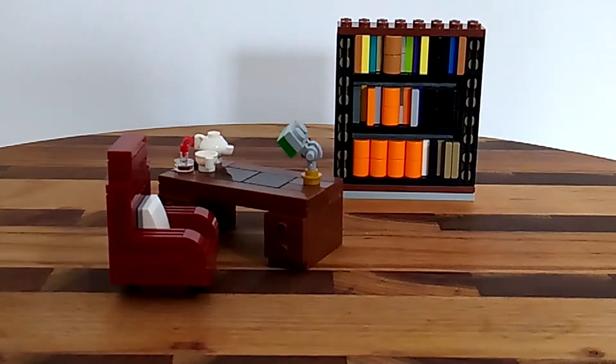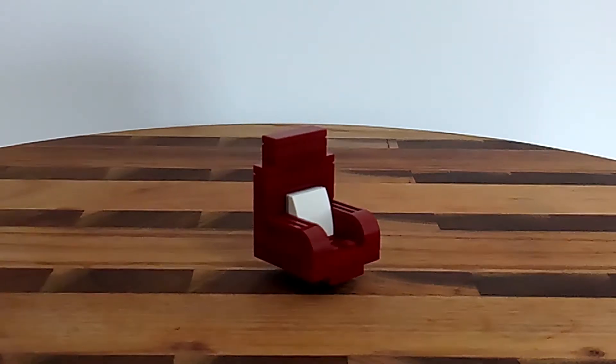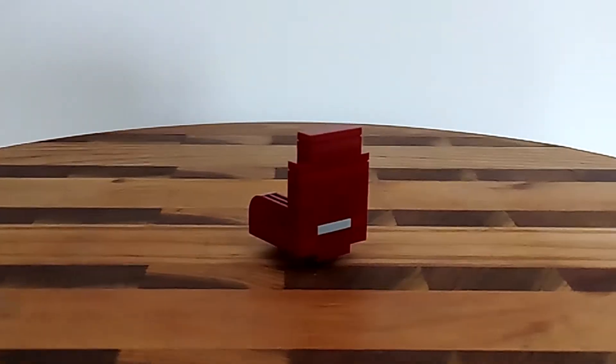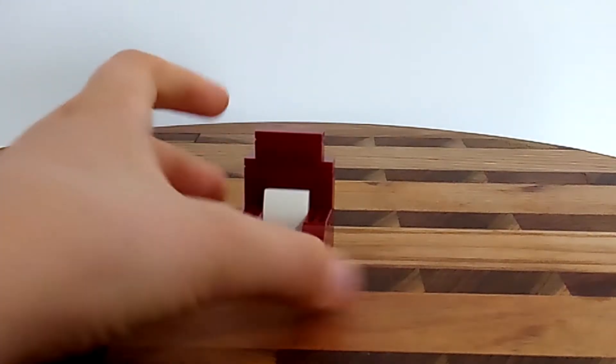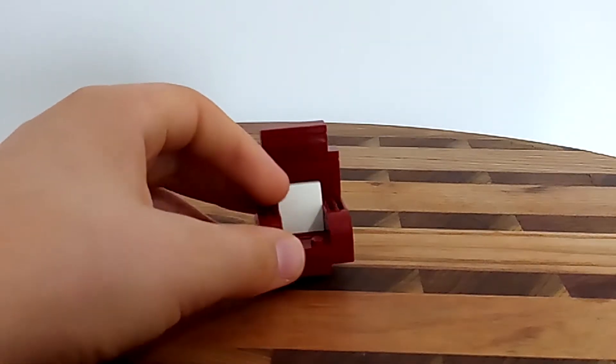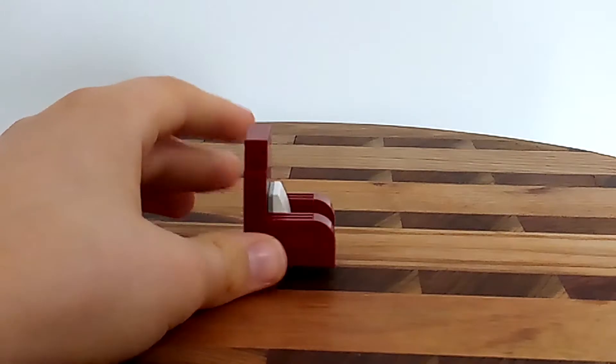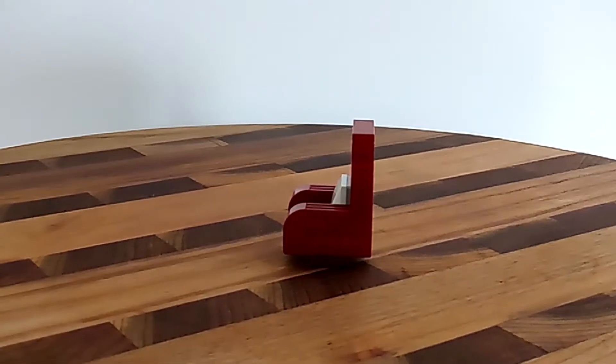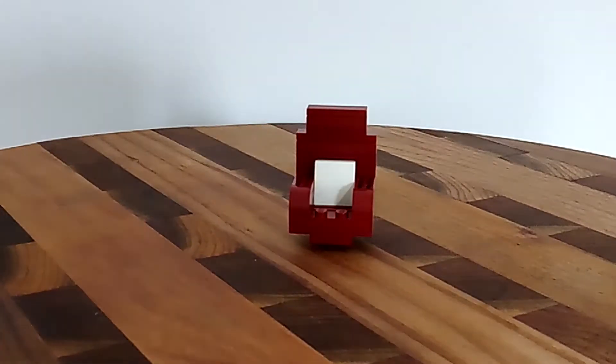Let's start with the chair. The chair, as you can see, is made out of mostly dark red. There is a grey plate there to hold the cushion in place. You don't have to do dark red for the chair, and you don't have to do white for the cushion. This chair is built on a 4x4 plate. Let's take this thing apart.